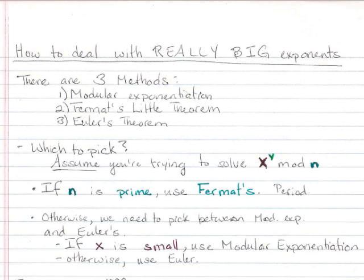There are three methods: modular exponentiation, Fermat's little theorem, and Euler's theorem.